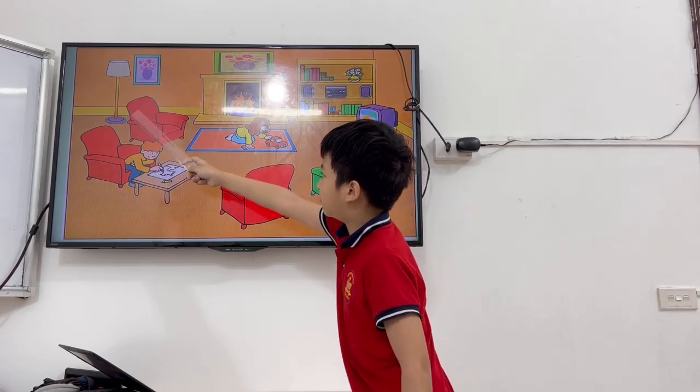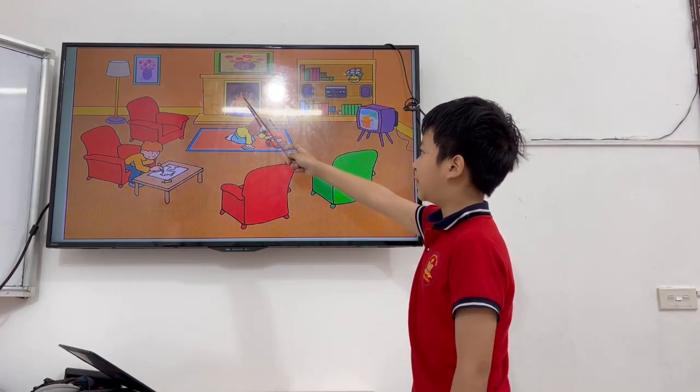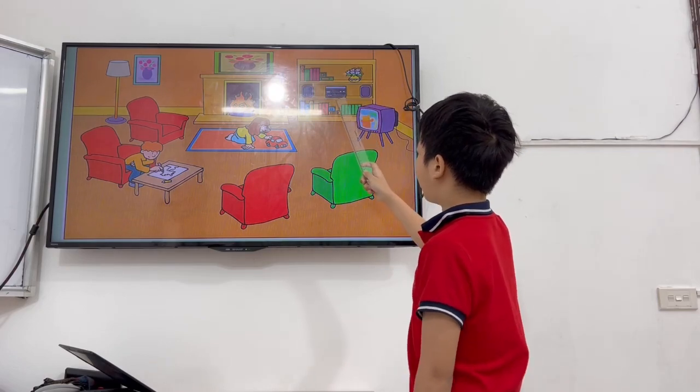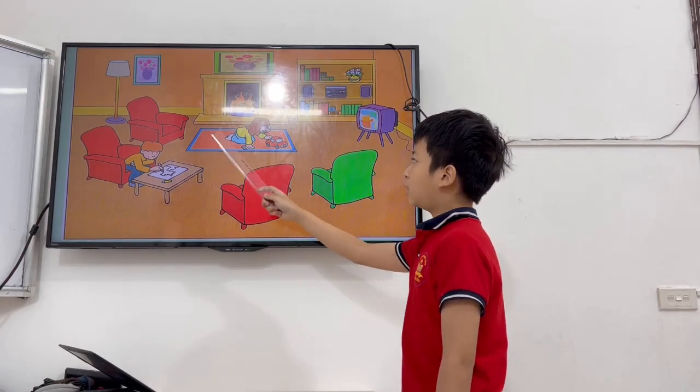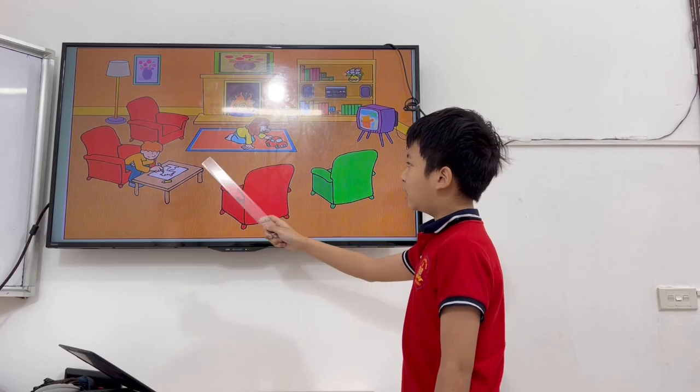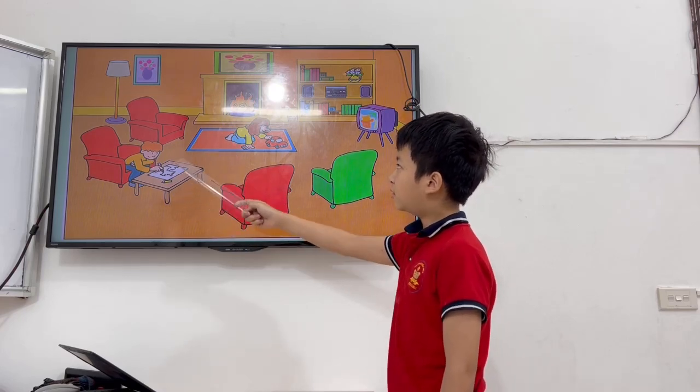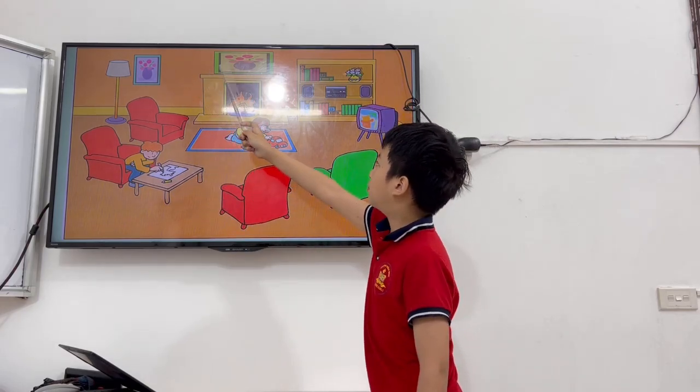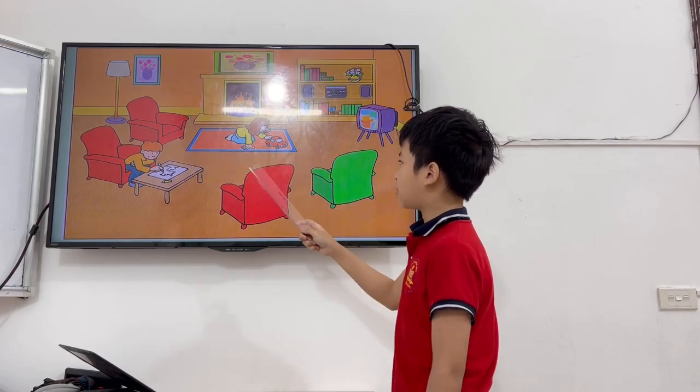There is a lamp, a fireplace, a sofa, a TV, a mat, a table, two pictures, and four armchairs.